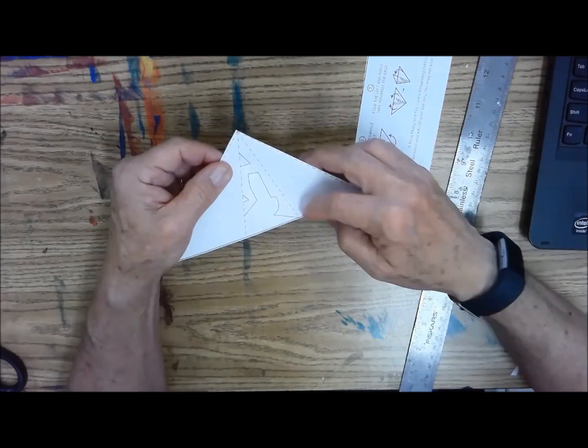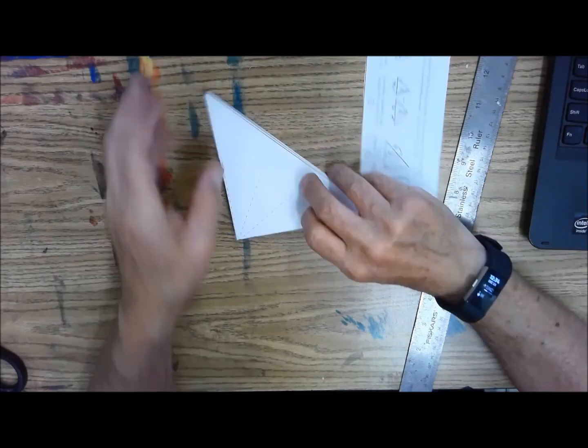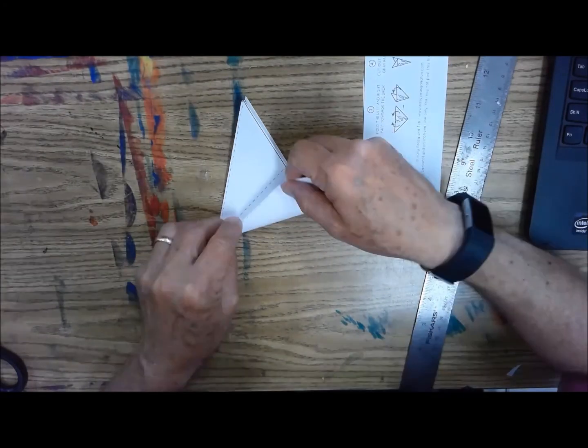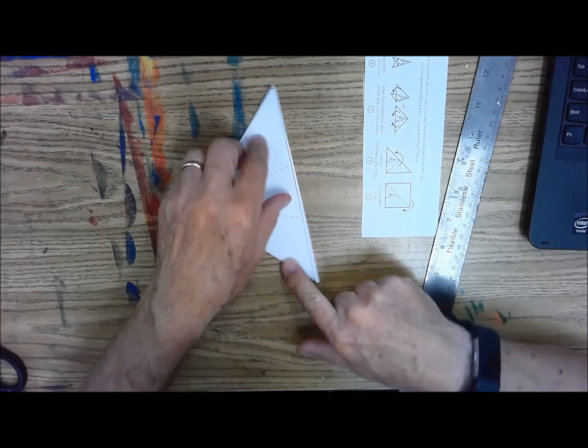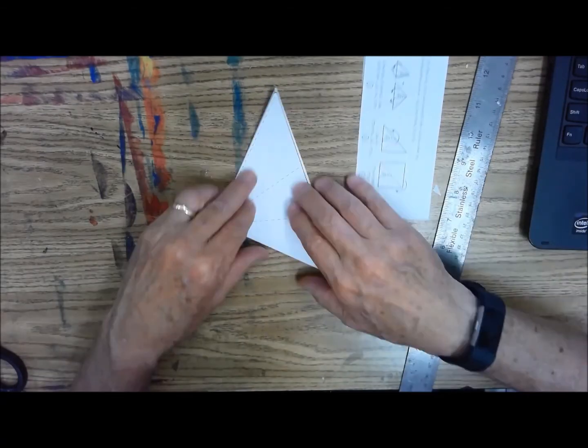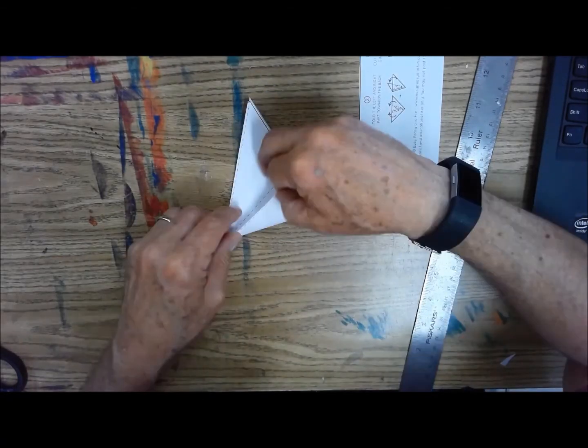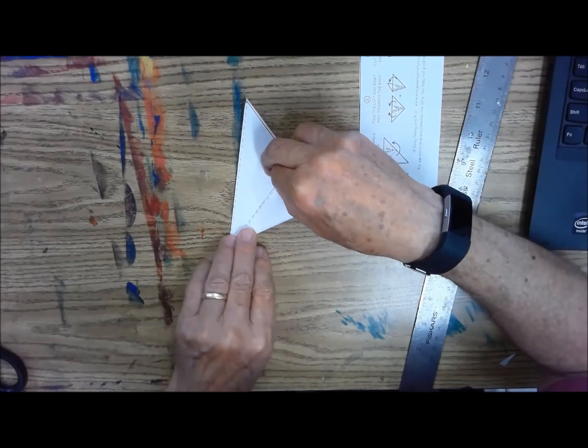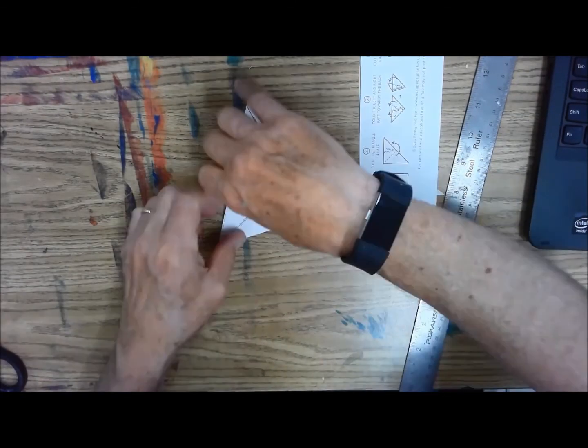Now these lines here are fold lines to divide it into a third and when you're doing it yourself you can measure this base of the triangle here and divide it into thirds and get where those lines should be if you don't feel comfortable eyeballing it. I'll show you both ways to do that.